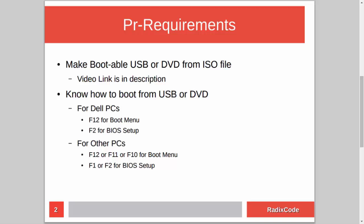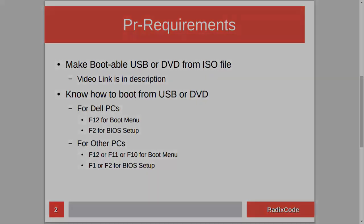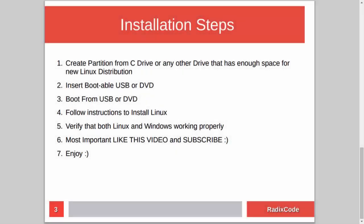After making a bootable USB, you should know how to boot your computer from a USB stick. For Dell laptops, press F12 to go to the boot menu and select the USB drive. You can also go to BIOS setup by pressing F2 and in the boot section change the boot order to boot from USB. On other computers, press Escape, F12, F11, or maybe F8. For BIOS setup you can press either F1 or F2.